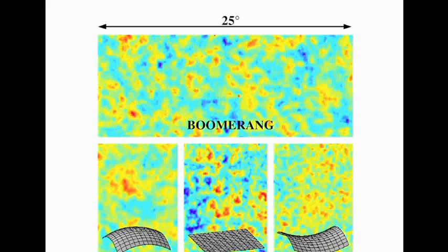Here's a different false color image of the same region, and we can compare this with universes we create on computers. Here's a closed universe where the lumps are bigger. Here's an open universe where the average size lump is smaller than these lumps.